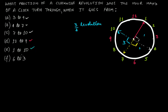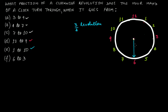For 6 to 3, the hour hand starts at 6. It takes 3 intervals to reach 9 — that's 1 right angle. Another 3 intervals lands at 12 — second right angle. Then 3 more intervals brings it to 3 — the third right angle. So the hand has rotated through 3 right angles, which again is 3/4 revolution.